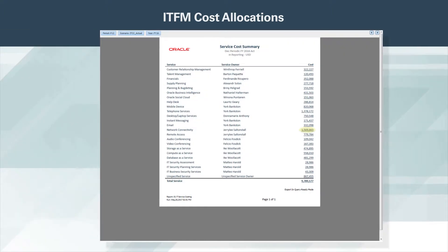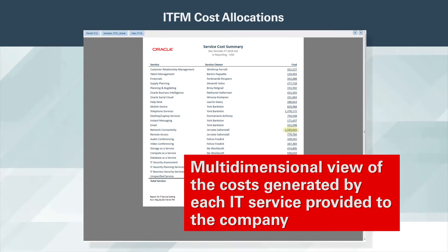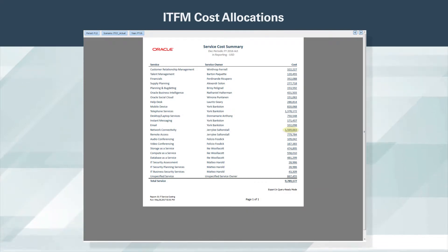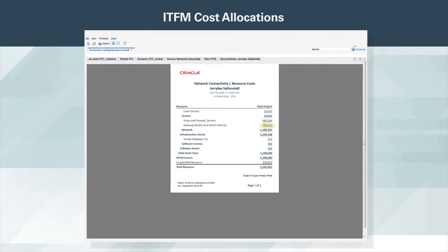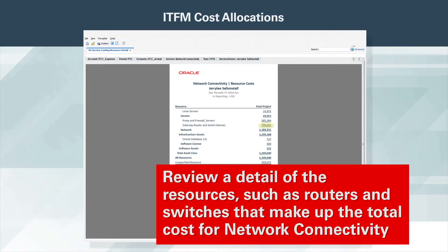The Service Cost Summary Report provides our IT Services Manager a multi-dimensional view of the costs generated by each IT service provided to the company. Focus drill regions allow him to drill down to granular level data for deeper analyses. Drilling on the network connectivity service provided by Jerry Lee's team, he can review a detail of the resources, such as routers and switches, that make up the total service cost for network connectivity.